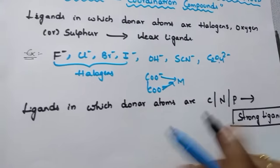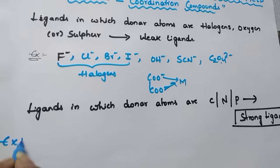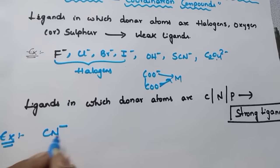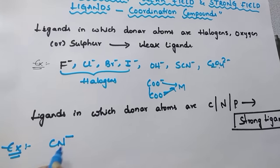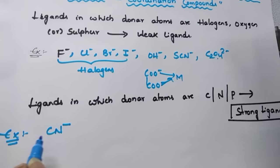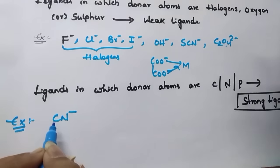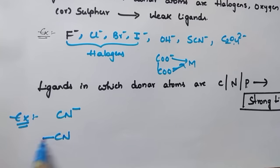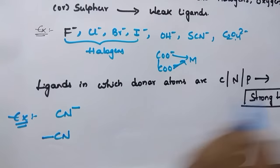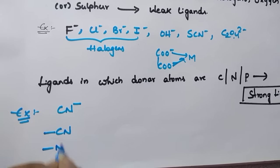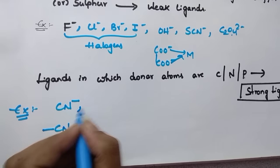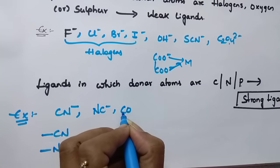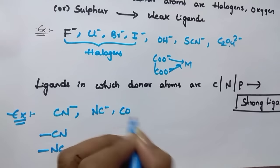Let us see some examples. CN⁻ is an ambidentate ligand — either nitrogen or carbon can be the donor. If carbon is the donor, it is a strong field ligand. If nitrogen is the donor (written as NC), it is also a strong field ligand. CO — carbon is the donor in CO, so it is a strong field ligand.